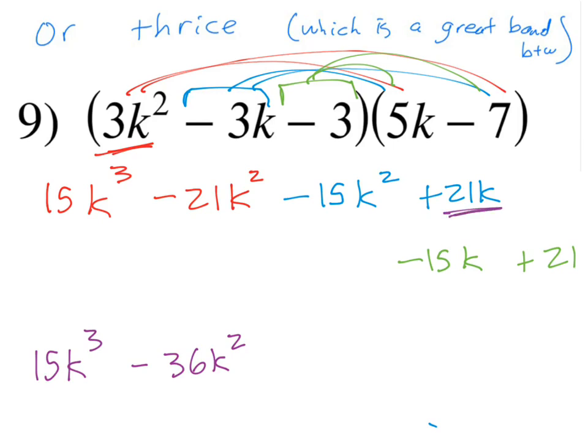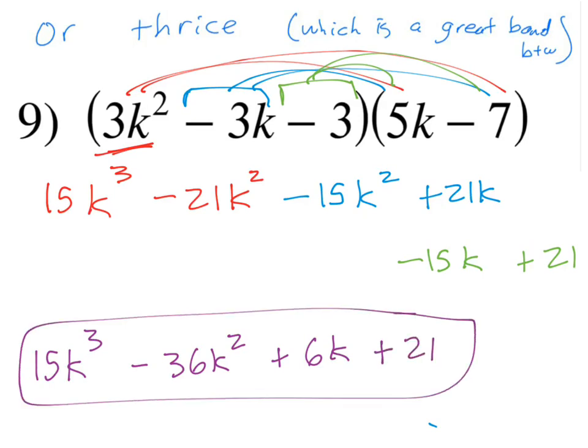And the next two terms do have the same amount of k's, so 21k and negative 15k. You add those up, you're going to get positive 6k. And then the 21 on the end doesn't have anything to combine with, so it stays there. And then we got plus 21. And none of these combine with each other at this point, and so your problem's done.